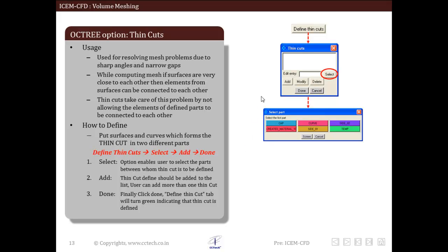Then we select the parts which contain surfaces which form thin cuts. Then we click on add. Specified pair of part will appear in the window.